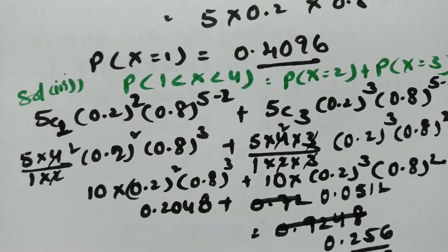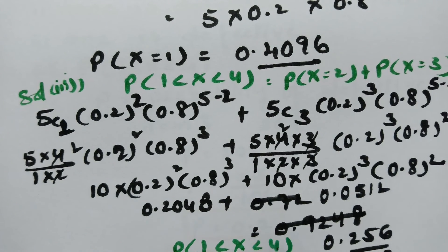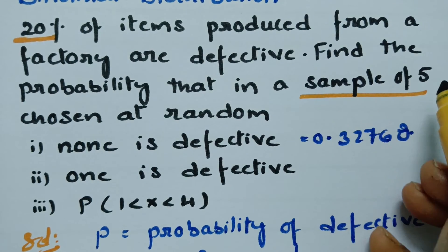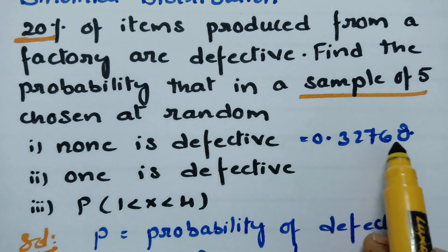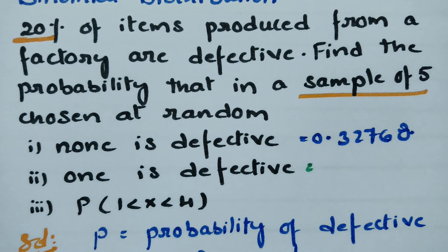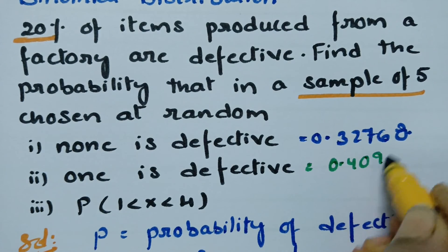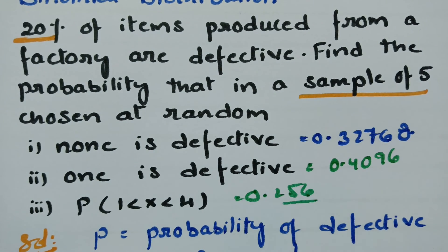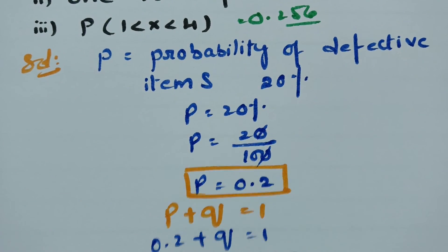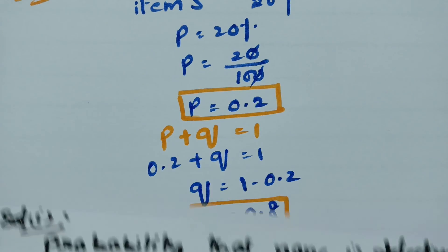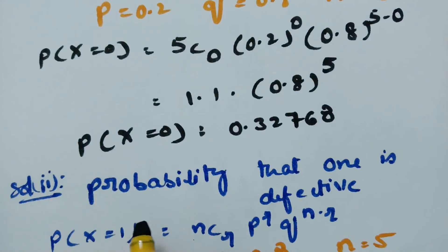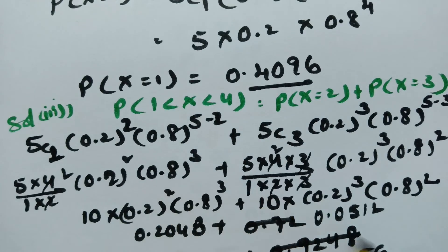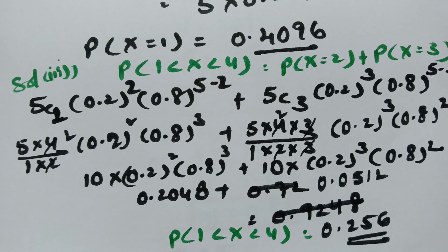The probability of 1 less than x less than 4 is 0.256. To summarize: zero defective items gives 0.32768, one defective item gives 0.4096, and the probability of 1 less than x less than 4 equals 0.256. These are the answers. p equals 0.2, q equals 0.8, n equals 5. For 0 defective items r equals 0, for one defective r equals 1, and for between 1 and 4 we use r equals 2 and r equals 3.